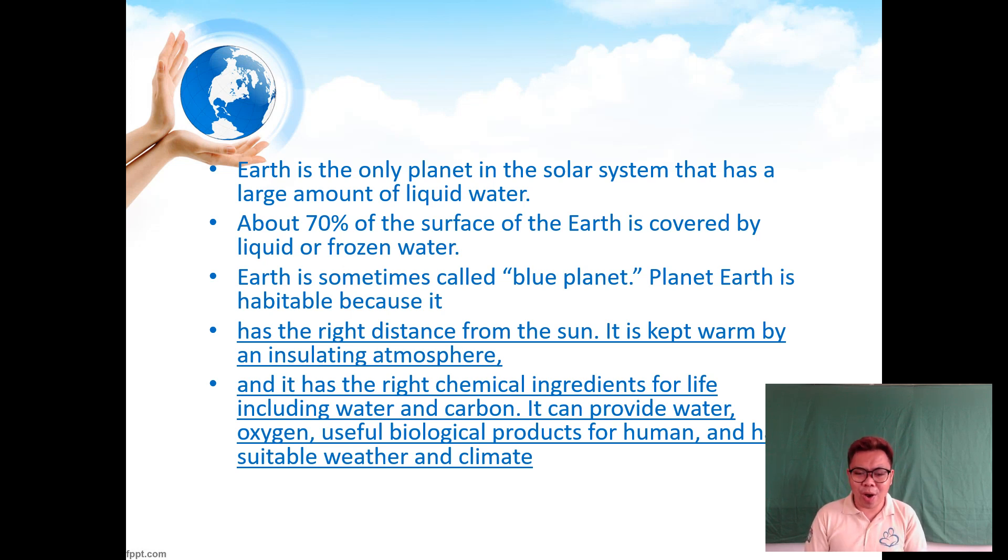Planet Earth is habitable because it has the right distance from the sun, is kept warm by an insulating atmosphere, and has the right chemical ingredients for life including water and carbon. It can provide water, oxygen, useful biological products for humans, and suitable weather and climate, which are all needed to maintain life of organisms.